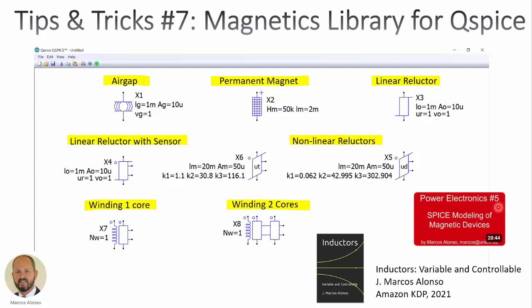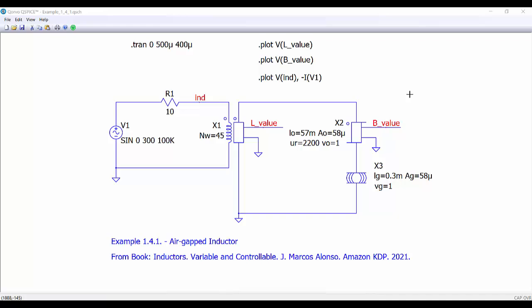We have seen how to use these elements in the video 'Power Electronics Number 5,' so if you want more information please take a look at that video. You can also find more information about these components and how to model inductors, variable inductors, and controllable inductors in my book available from Amazon KDP. Let's now look at three quick examples of using the library in simple applications, taken from my book.